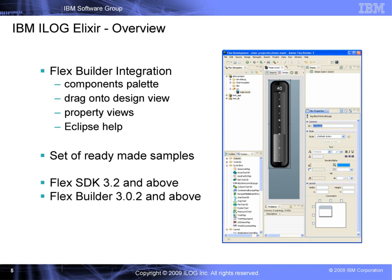Elixir is a commercial-grade set of components, field-tested by thousands of projects. It's closely integrated with FlexBuilder, including simple UI creation with components drag-and-drop, property editing, library source code access on control-click, and F1 context-sensitive help. It's also shown through a set of ready-made samples available in source code and commented for you to jumpstart your developments. More samples are available from our blog at blogs.ilog.com/elixir.